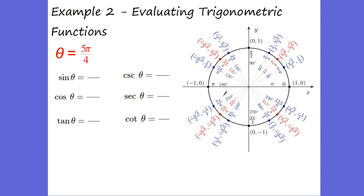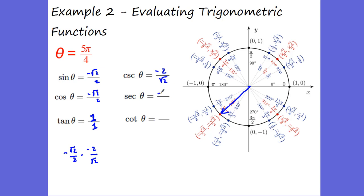Let's try another one: five pi over four — right here in quadrant three. Sine is negative root two over two. Cosine is negative root two over two. Tangent is negative root two over two divided by negative root two over two, which equals positive one. Cosecant is the reciprocal: negative two over root two. Rationalize by multiplying by root two over two to get negative two root two over two, which simplifies to negative root two. Secant is also negative root two.